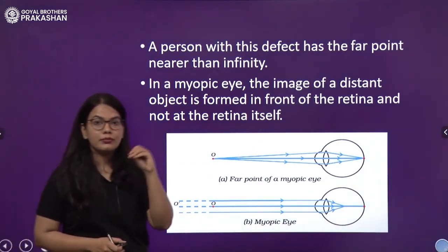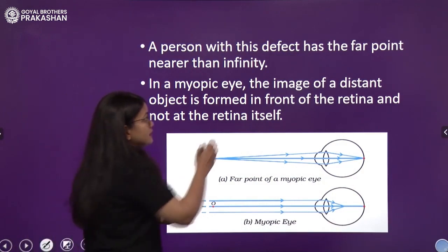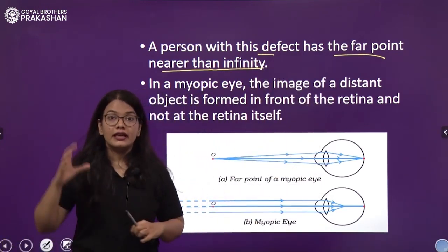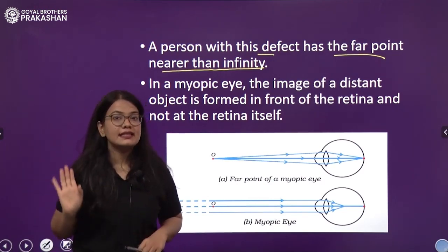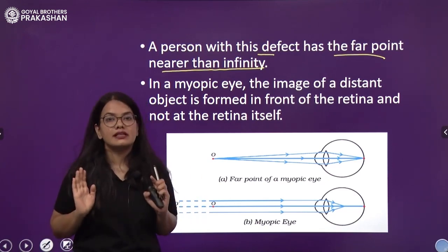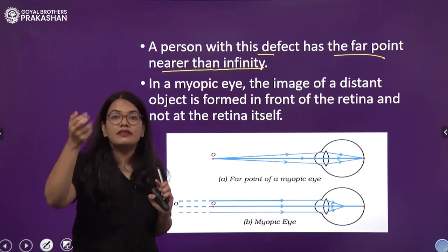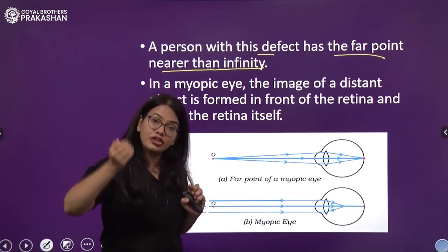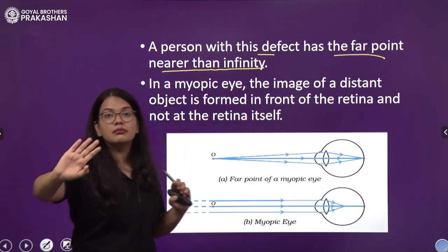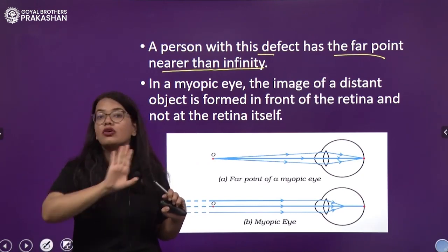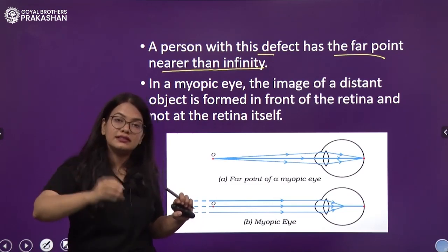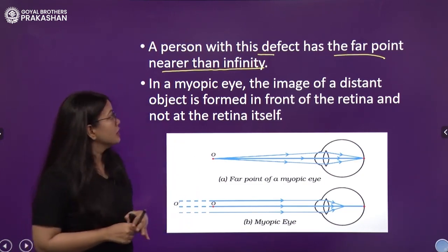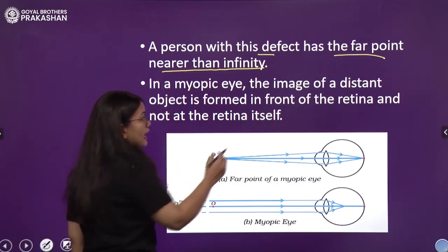In terms of near point and far point, a person with this defect has a far point nearer than infinity. The far point is the farthest distance through which the human eye can see distinctly. With a myopic eye, you cannot see objects that are far apart — the farthest point has reduced. Most people can see up to about 100 centimeters, but a person with a myopic eye may need to bring it to 50 or 60 centimeters. So the far point has become nearer than infinity.